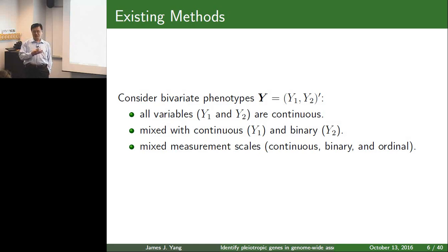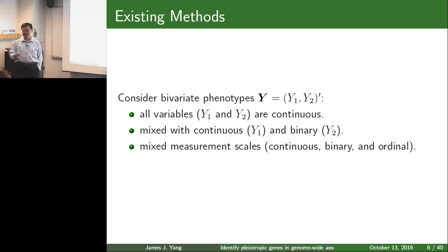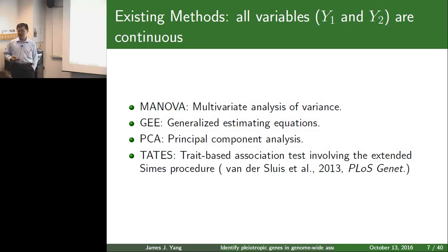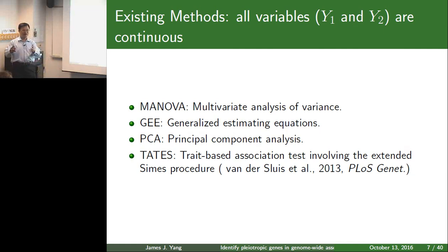We want to do a quick review of existing methods before I jump into my proposed method. I'll just use a simple bivariate case as an example to explain, and you can easily extend that to multivariate. For bivariate, you have at least three types: all continuous, one continuous and one binary, or ordinal. For continuous variables, by extension of the univariate ANOVA, we use MANOVA for multivariate. You know ANOVA from undergraduate study, and MANOVA is just an extension. It's easy to do and there is software. But MANOVA is not very powerful because it has strong assumptions.